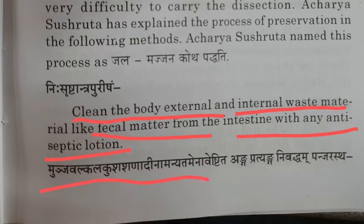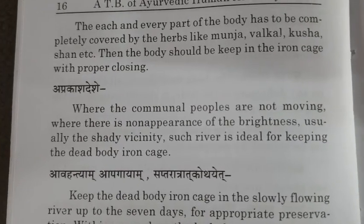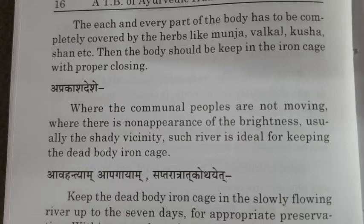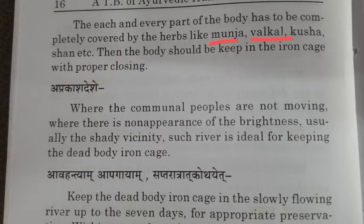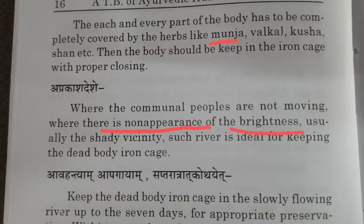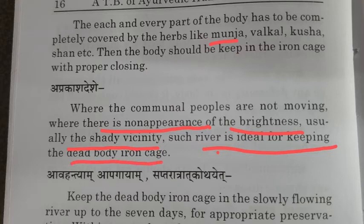Munja Valkala Shanadi Namanneta Mena Veshtita Anga Pratyenga Nivaddam Panjarastham means each and every part of the body has to be completely covered by herbs like Munja, Valkala, Kusha, Kushana, etc. Then the body should be kept in an iron cage with proper closing. Next, Aprakasha Desha means a place where the general public is not moving and there is no bright light — a shady vicinity such as a riverbank is ideal for keeping the cadaver in the iron cage. Cadaver refers to the dead body in anatomical terminology.